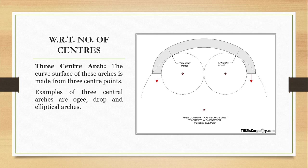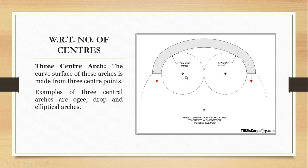Three-center arches have a curved surface formed from three center points. Examples include ogee, drop, and elliptical arches. A pseudo-ellipse arch uses three center points: one for the side arcs and one for the larger central arc, resulting in an elliptical-looking form. That is all about the introduction to arches.